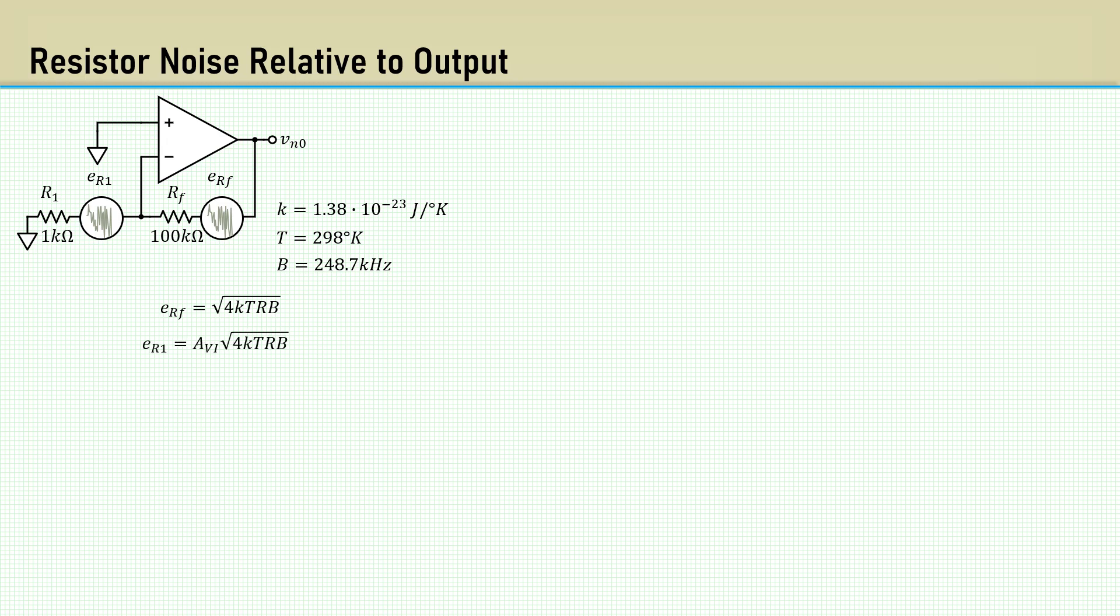But the noise generated by R1 gets amplified by the inverting gain, so the 1K resistor's noise voltage gets multiplied by 100. We can include the ratio of RF over R1 to amplify the noise of R1.